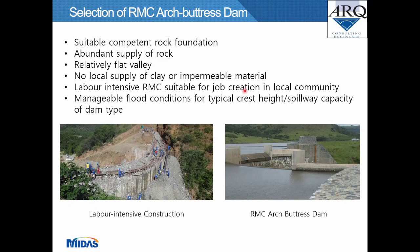Considering all the above, the RMC arch buttress dam was selected. The reasons: competent rock foundation, abundant supply of rock, a relatively flat valley, no local supply of clay or impermeable material ruling out embankment dams, labour-intensive RMC being suitable for job creation in the local community, and hydrology studies indicating manageable flood conditions for the typical crest height and spillway capacity of this dam type.